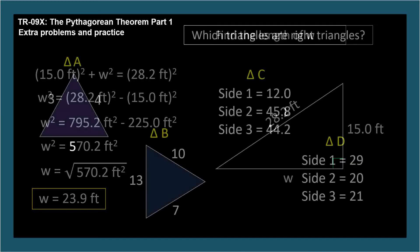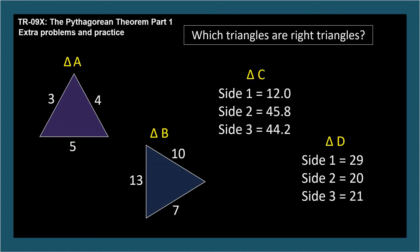Which triangles are right triangles? Two are drawn and two are described only by the length of their sides. The drawn triangles are definitely not to scale — they certainly don't look like right triangles. I'll reveal the answers all at once, so pause if you like. Remember, the Pythagorean theorem is true only for right triangles.